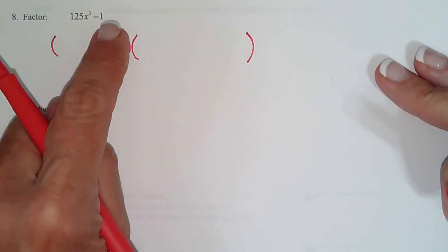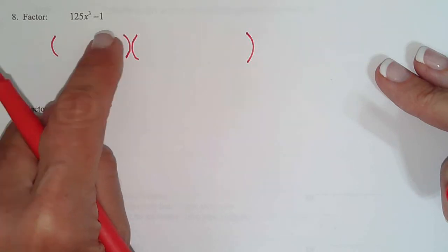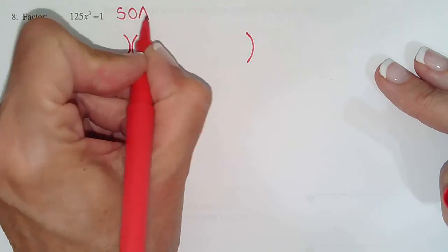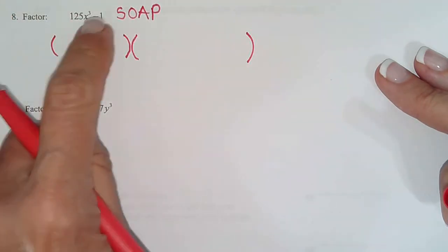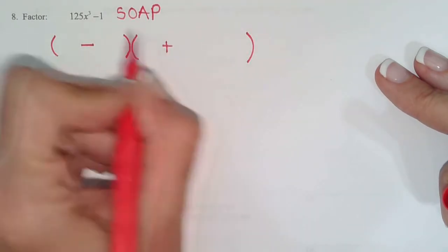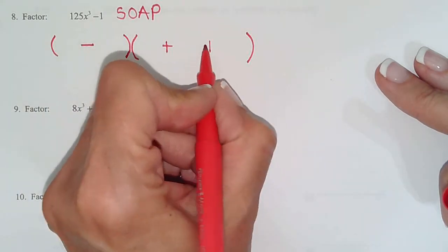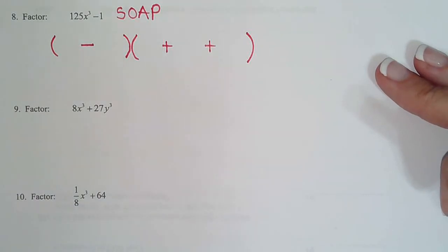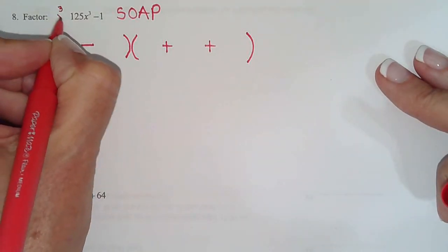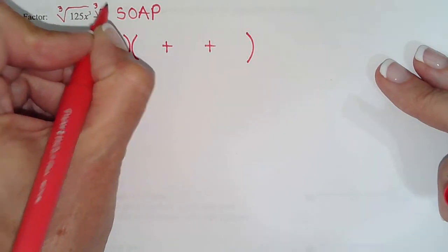So, we still have to look for GCFs. No GCFs. Then, we fill our signs in with SOAP. And remember, SOAP only works for cubes. Same sign as the problem. Opposite of the problem. Always positive. So, we just get it all set up and ready. Then, as I showed you in the example, you do cube roots.